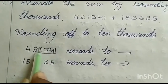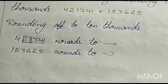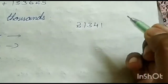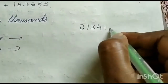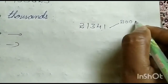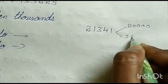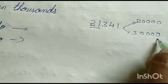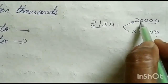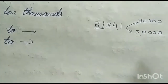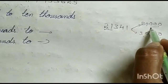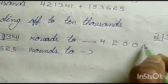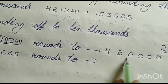For 4,21,341, we check 21,341. Is 21,000 nearest to 20,000 or 30,000? It is nearest to 20,000 — 30,000 has too much difference. So here we write 4,20,000.